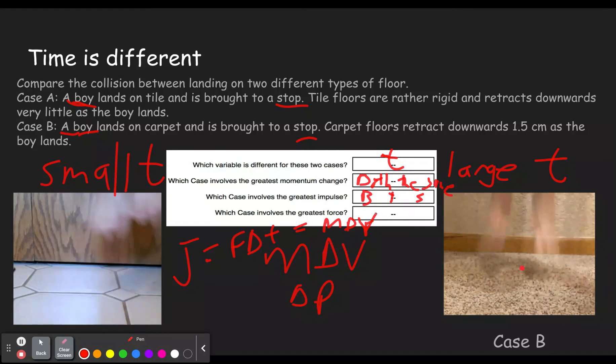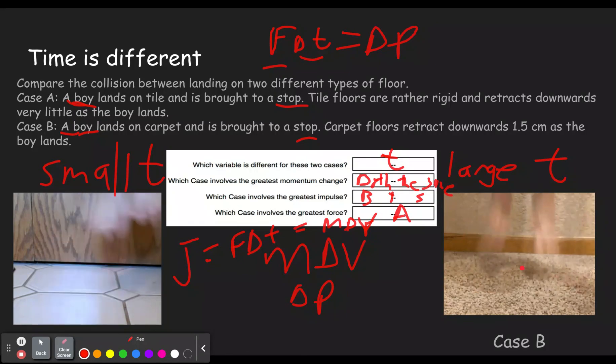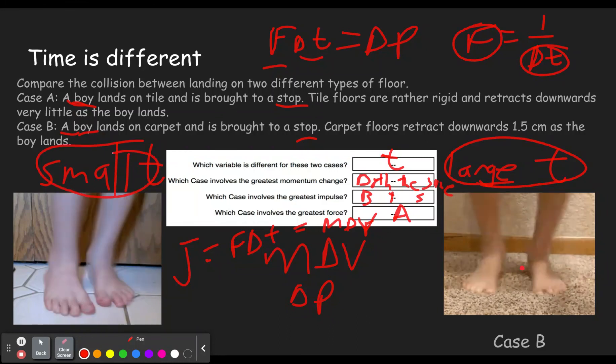So which case involves the greatest force? Well, if delta P is the same for both of them and one of them has a small time, that means it must have a big force. So in this case, case A where he hits the tile has a small time of impact. He hits and stops almost immediately. That's going to have a bigger force, which most of you know, if you fall from a big height on tile versus falling from that same height on carpet, the tile one will make your feet hurt more. Why? Because there was more force. Keep in mind, we can also just remember that force is inversely proportional to time. Since time got bigger over here, then the force got smaller. Over here, time got smaller, so the force got bigger. So that is why A is correct.